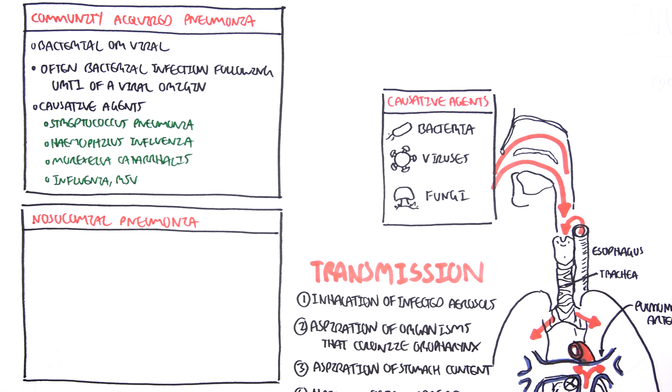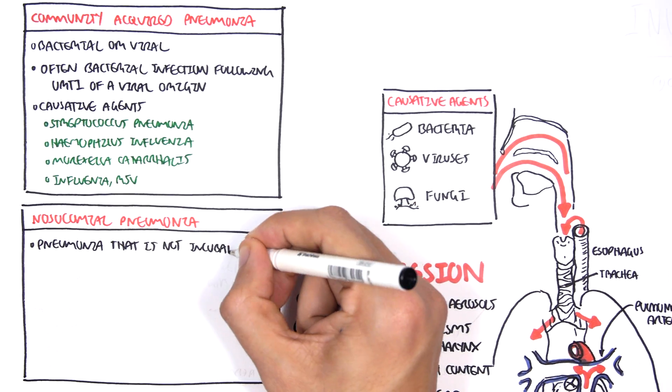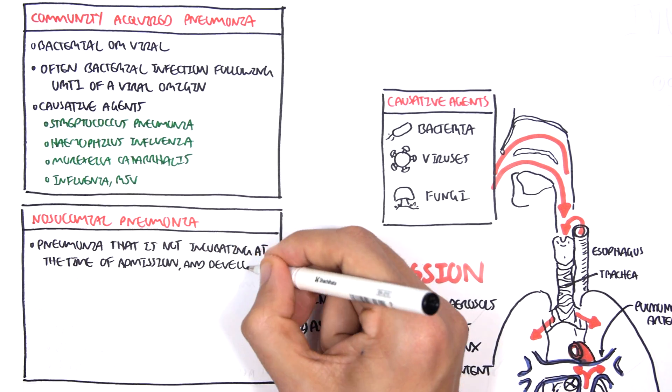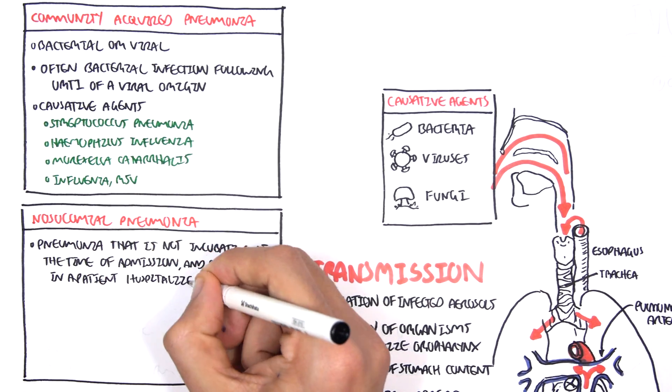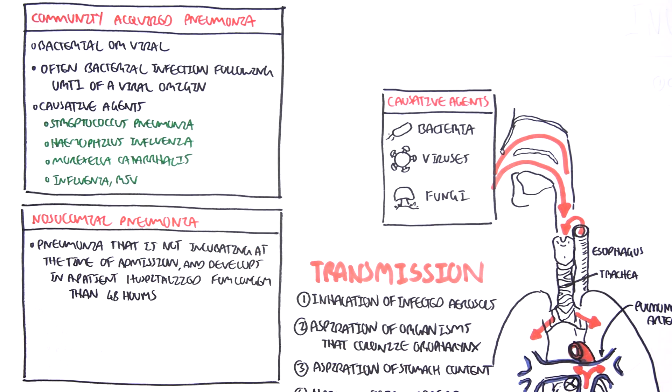Now nosocomial pneumonia, also known as hospital acquired pneumonia. Nosocomial pneumonia is pneumonia that is not incubating at the time of admission to the hospital and develops in a patient hospitalized for longer than 48 hours. So essentially it's pneumonia, the lung infection after being admitted to hospital.